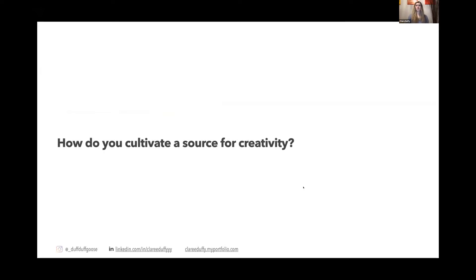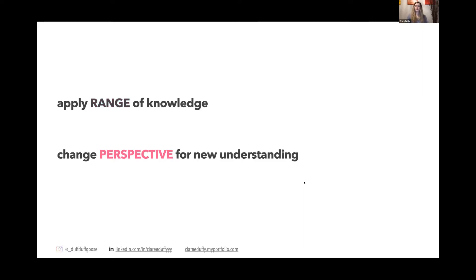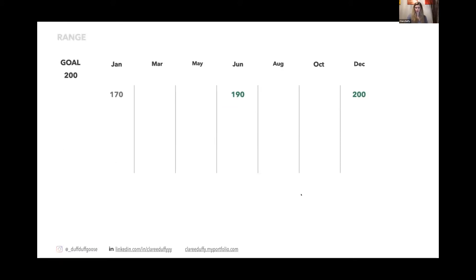So back to tonight's question, how do you cultivate a source for creativity? Personally, there are two ways. One is range, thinking about the ways to alter knowledge from previous experiences so that it can be applicable to new challenges you face. An example is with goal setting. I never really understood what it meant to plan and work towards a goal until I was in a gym environment. For example, in lifting, say you have a 170 pound back squat and by the end of the year you want a 200 pound back squat. It's simple math over 12 months. That's about two and a half pounds a month.